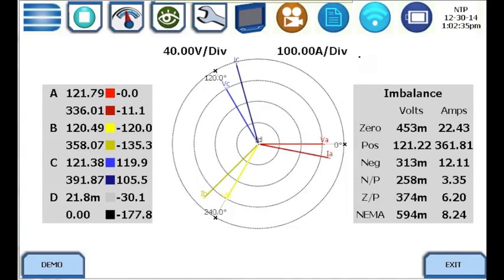Shown is a three-phase Y phasor diagram indicating the phase relationships between voltage and current on channel A, channel B, and channel C.